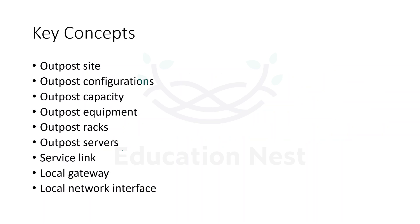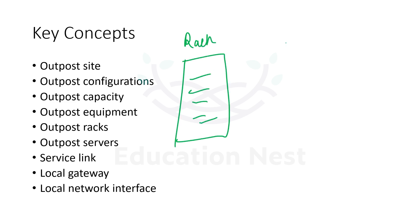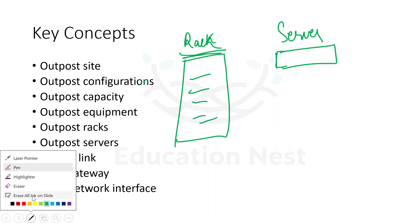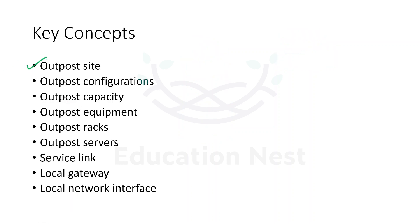Whenever you order the Outpost, you can either order the Outpost rack, which is the entire rack of servers, or you can order one single Outpost server. The server is the smaller version of the rack. The key concepts include: Outpost sites, Outpost configurations, Outpost capacity, Outpost equipment, Outpost racks, servers, service link, local gateway, and local network interface.